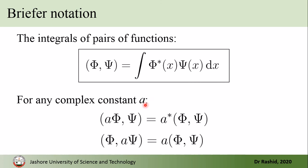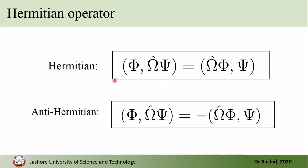If 'a' is a complex constant, then when 'a' is multiplied with the first function and we want to take it out, we have to take its complex conjugate out. If it is multiplied with the second function, then we can simply take it out as is. This can be understood from the definition: if 'a' is multiplied with phi, since the complex conjugate of phi is used for the first function, it will become 'a-star'. But if 'a' is multiplied with the second function psi, it simply remains the same.